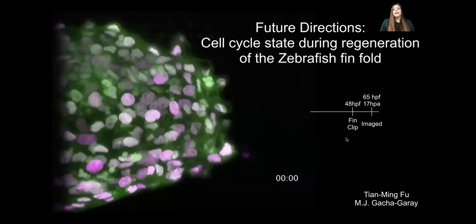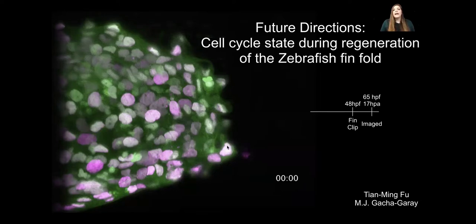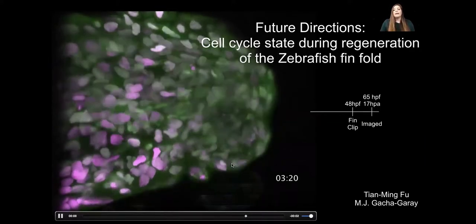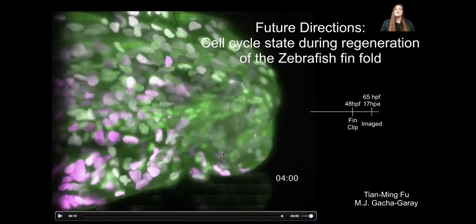We're also interested in the role of the cell cycle in regeneration, which involves reactivation of the cell cycle in the growing blastema or quiescent stem cells. We can use the larval fin fold of the zebrafish to assess the cell cycle during regeneration. We performed fin clips at 48 hours post fertilization, and a time lapse taken in collaboration with the Betzig lab was imaged at 17 hours post amputation every five minutes for about four hours. We're really excited to follow up on these experiments and assess the cell cycle state of different populations within the regenerating fin fold.